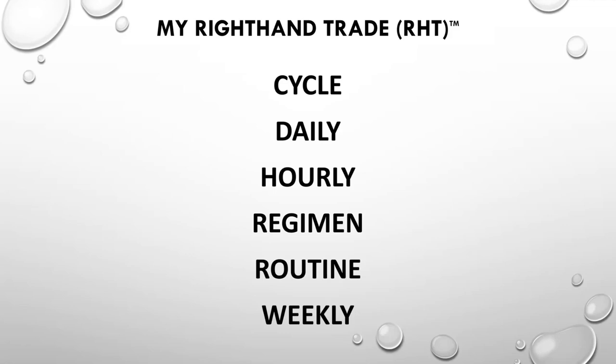It's called span of control — you can only manage about three people, or in this case three trades, effectively.